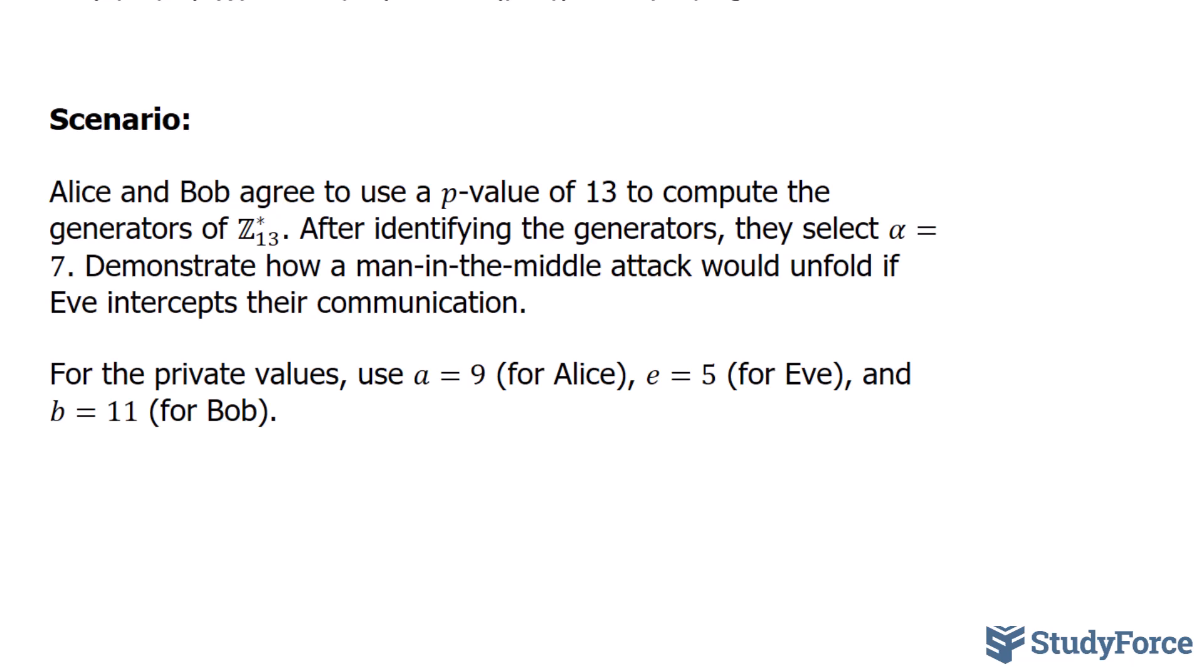Suppose Alice and Bob agree to use a p-value of 13 to compute the generators of Z star sub-13. After identifying the generators, they select an alpha value of 7.